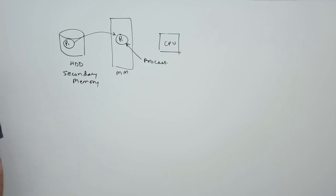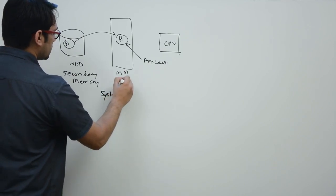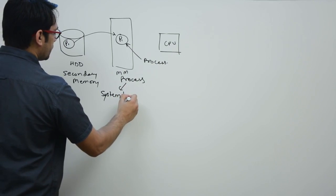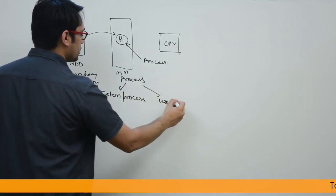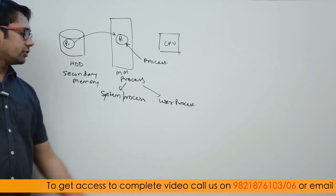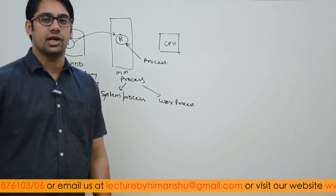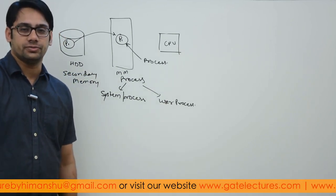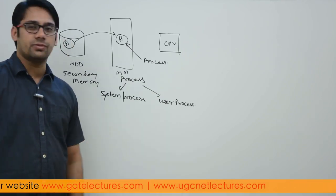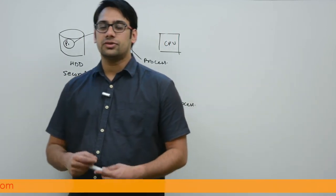A program in execution is called a process. The operating system is responsible for creating and deleting both system and user processes, and for scheduling these processes. There are two types of processes: system processes, which are created by the operating system to perform its tasks, and user processes, which are created by the user — for example, programs you installed and run.